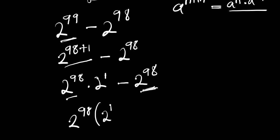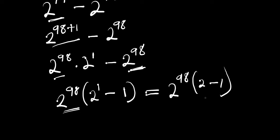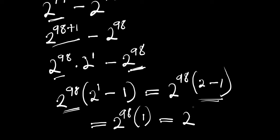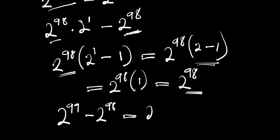This gives us 2 to the power of 98 times 2 to the power of 1 minus 1. Since 2 to the power of 1 is 2, we have 2 to the power of 98 times 2 minus 1, which is 2 to the power of 98 times 1. Therefore, 2 to the power of 99 minus 2 to the power of 98 equals 2 to the power of 98.